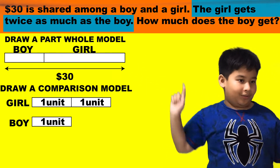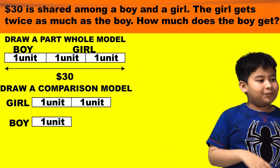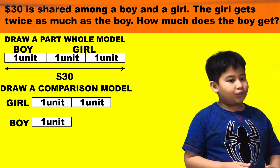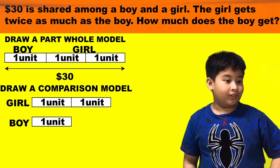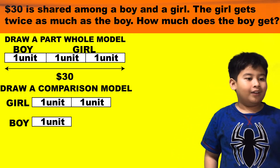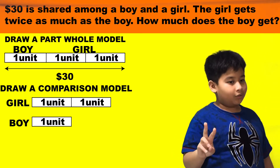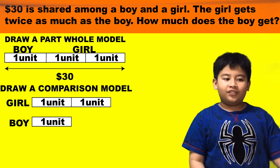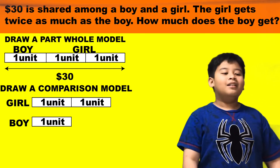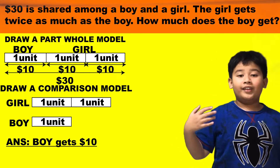So you have one unit, one unit, one unit. You substitute the boy and the girl, and you get three units total — boy has one unit and the girl has two units. So you can easily do 30 divided by 3, and your answer is 10. So the boy gets $10.